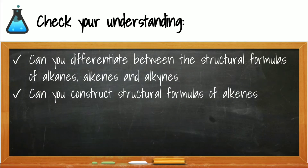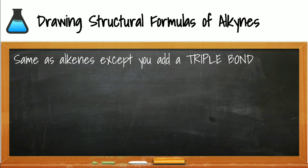By now you should be able to differentiate a formula as that of an alkane, alkene, or alkyne, and you should be able to draw the structure of an alkene. Drawing alkynes is essentially the same as alkenes, except alkynes have triple bonds instead of double bonds.